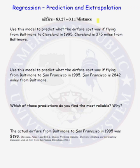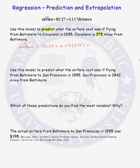Let's use this regression equation to predict what the airfare cost was if flying from Baltimore to Cleveland in 1995, knowing that Cleveland is 375 miles from Baltimore. We plug in 375 for our distance: airfare-hat equals 83.27 plus 0.117 times 375. This gives us a predicted airfare based on our model of $127.15.